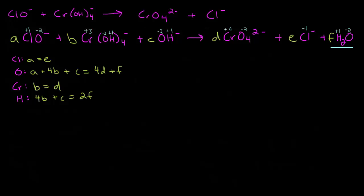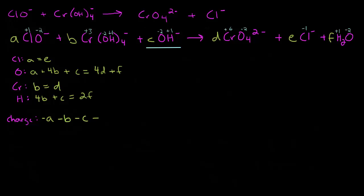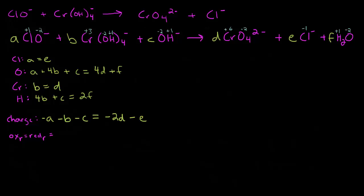Now we can do our charge equation. The A molecule has a negative one charge, the B molecule has a negative one charge, the C molecule has a negative one charge. The D molecule has a negative two charge, so negative two D. The E molecule has a negative one charge, and water is neutral. So: minus A minus B minus C equals minus 2D minus E. Now we can do our redox equations: oxidation on the reactant side equals reduction on the reactant side, which equals oxidation on the product side, which equals reduction on the product side.